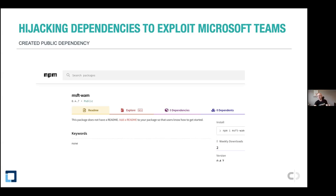To test this theory, I created my own module based on one of those other modules — msftwam — and set it to the same version listed in package.json. That means if a build server or local developer does an npm install without being connected to the proxy that pulls in the local dependency, it'll reach out and grab it from the public repo. We're confusing the package manager into installing our malicious third-party code instead of the private dependency.